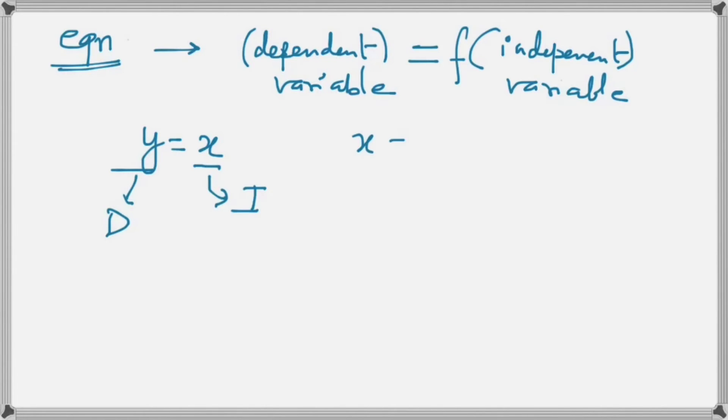X is equal to 2t plus 4. What that means is t is the independent variable and obviously x is the dependent variable. Now this is a general rule, it is not a hard and fast rule that you write the dependent variable on the left and the independent variable on the right. It is just a general rule.